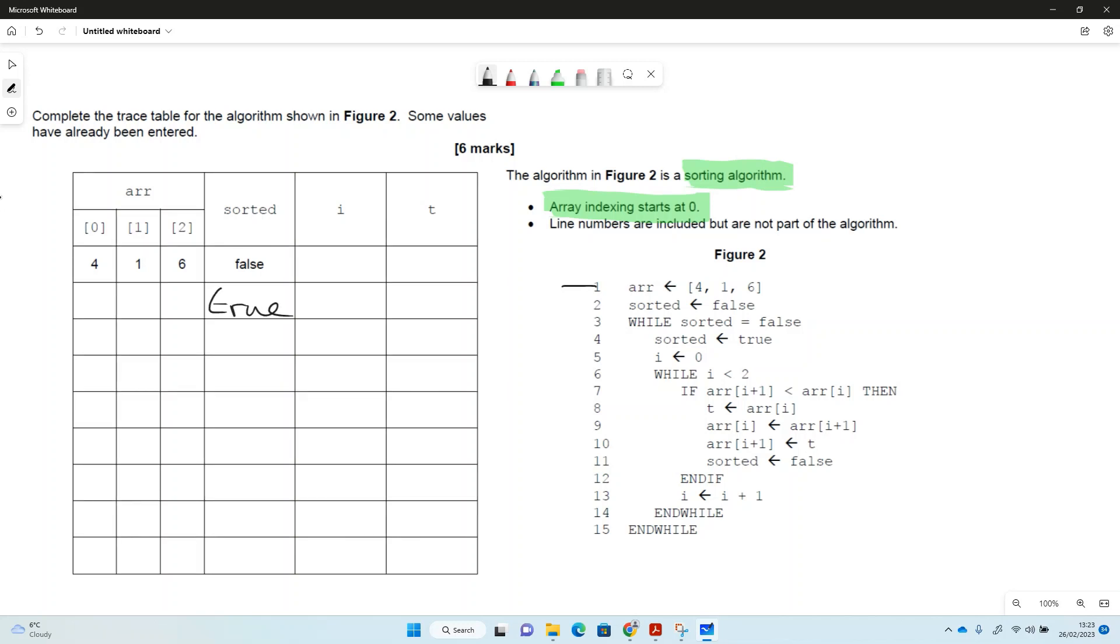While sorted is false, well it is false, then sorted gets true. So the first thing to write in is true just there. i gets 0, so we'll write 0 in there. While i is less than 2, well it is less than 2. If array[i+1], so i is 0, i+1 is 1, so if 1 is less than array[i] which is 4, if 1 is less than 4, which it is, then t gets array[i], so t gets 4 in this case.